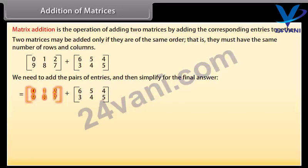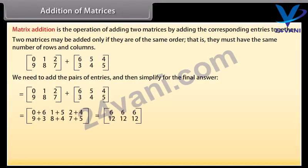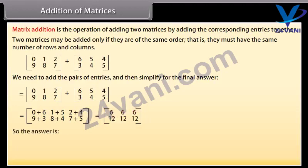Row-wise: first row 0, 1, 2; second row 9, 8, 7 — plus — first row 6, 5, 4; second row 3, 4, 5 — equals — first row: 0+6=6, 1+5=6, 2+4=6; second row: 9+3=12, 8+4=12, 7+5=12. So the answer is the matrix with first row 6, 6, 6 and second row 12, 12, 12.